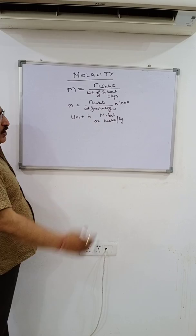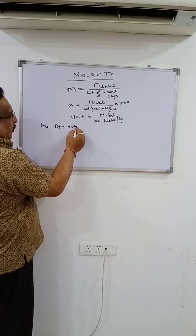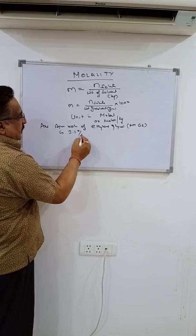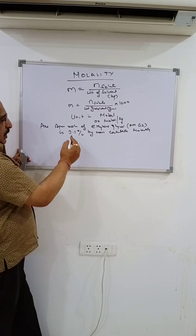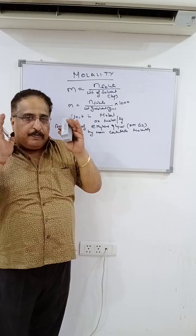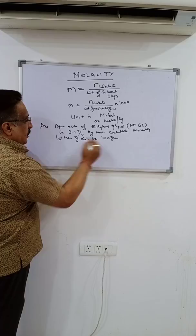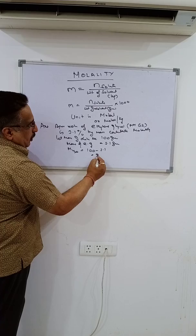Here is a simple question. An aqueous solution of ethylene glycol, molar mass 62, is 3.1% by mass. Calculate molality. 3.1% by mass means in 100 grams of solution, there are 3.1 grams of ethylene glycol. Let mass of solution be 100 grams; then mass of ethylene glycol is 3.1 grams, and mass of water will be 100 minus 3.1, equal to 96.9 grams.